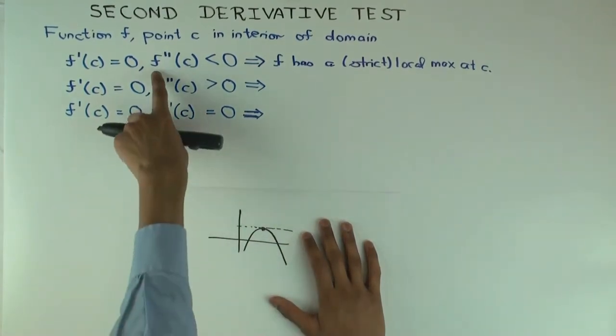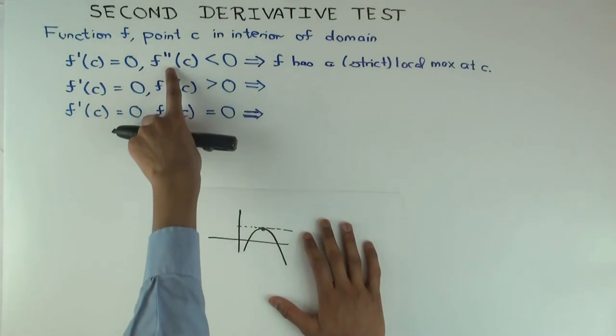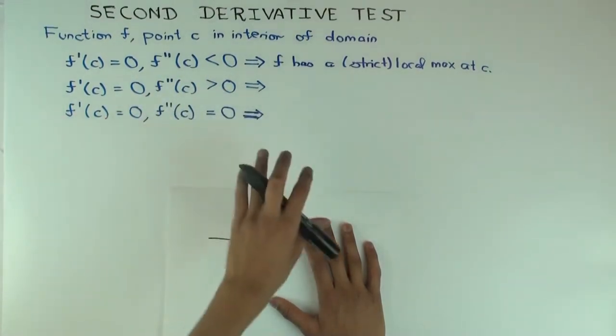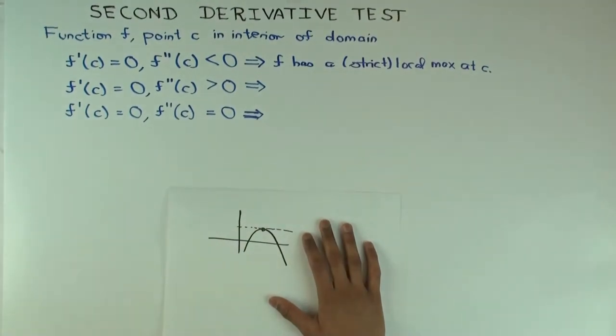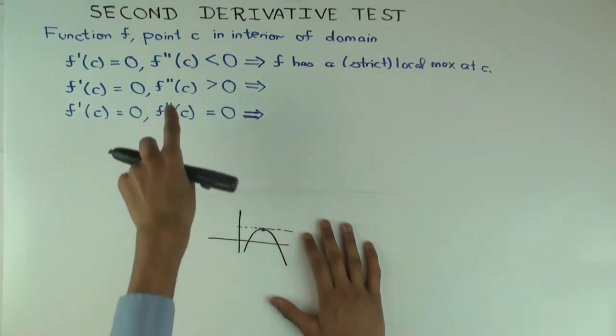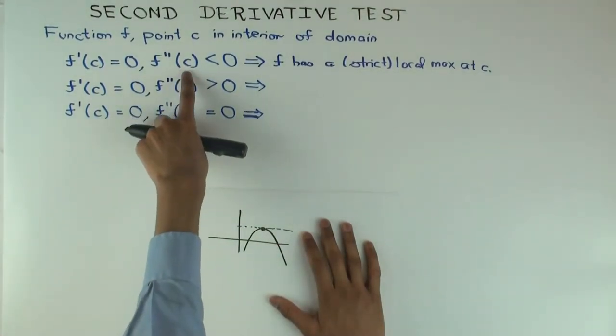Because notice, we're not actually saying f double prime x is, we're not claiming anything about f double prime x on the left or right of c. We're just claiming about f double prime at the point. So, it doesn't actually have to be twice differentiable anywhere else. It just has to be twice differentiable at c.